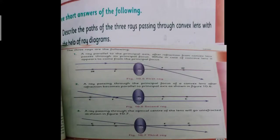First of all, write short answers of the following. Describe the parts of the three rays passing through convex lens with the help of the ray diagram. As you know, we have discussed in class what are the ray diagrams and they are useful to study about image formation by convex lenses.